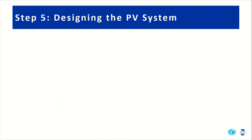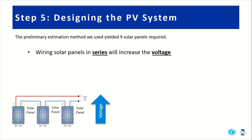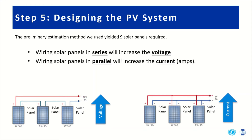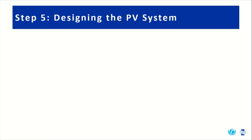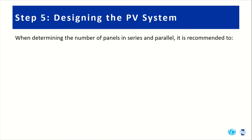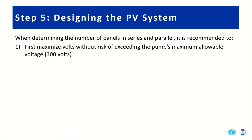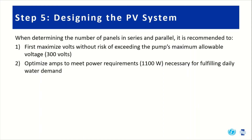Then we ask: how many panels should be put in series and how many in parallel? Wiring panels in series increases the voltage, while wiring panels in parallel increases the current or amps. Panels are typically wired in series first to maximize power with the least number of panels. It is recommended to first maximize volts without exceeding the pump's maximum allowable voltage of 300 volts, then optimize amps to meet the power requirement of 1100 watts necessary for fulfilling the daily water demand.